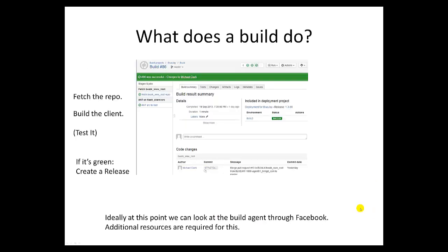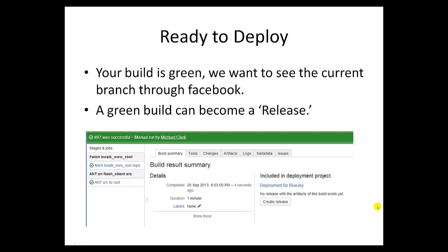What exactly does a build do? This is a direct picture of our Bamboo build process for master. As you can see, it fetches the BeWalk www root repo that we showed you earlier, then it runs a bunch of scripts across that. Very shortly it's also going to run tests and make sure that the build is actually functioning within expected parameters. This particular build we've already deployed. I built again so you could see the process, and we got a green build — number 87. Because we got a good green build, we can now create a release, which we could then deploy.